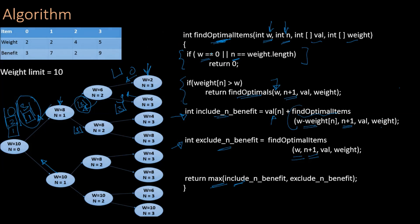Can we reduce these computations? There is a problem of redundant computations: state w=8, n=2 is computed twice, and similarly for states w=4, n=3 and w=8, n=3. To avoid this, we store intermediate results in a two-dimensional array indexed by w and n — the two parameters that uniquely identify each state. With these two modifications — returning a knapsack along with the benefit, and memoizing intermediate results — let's look at the improved code.